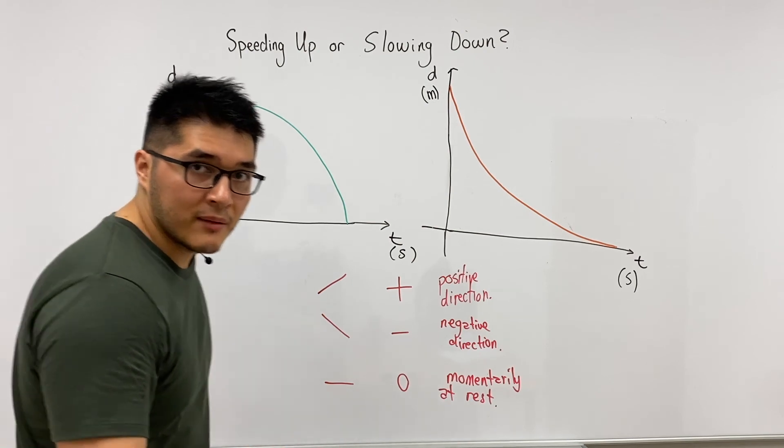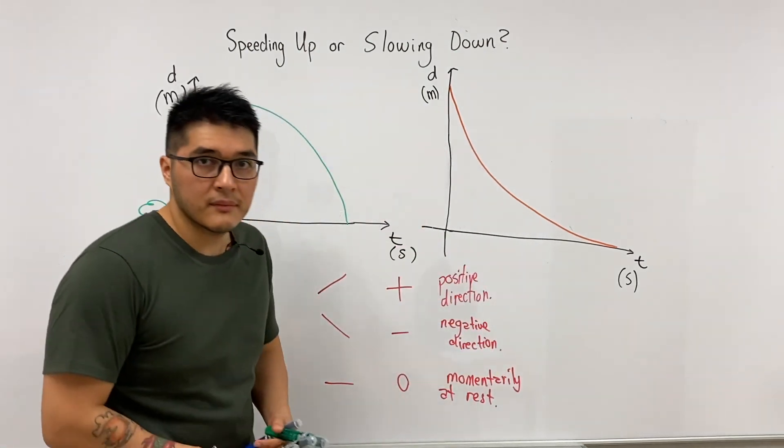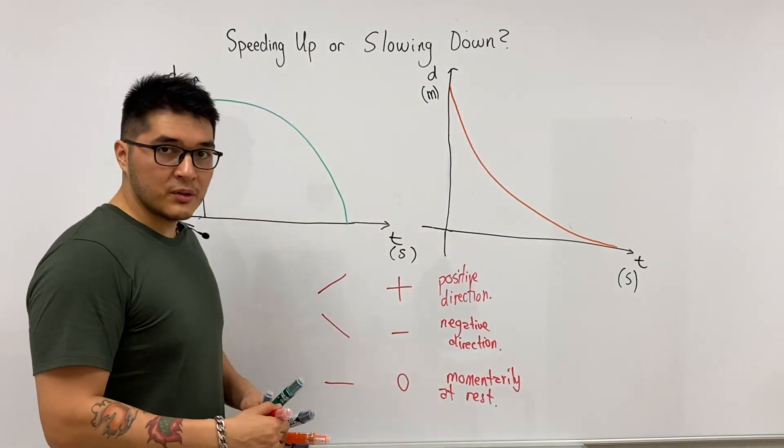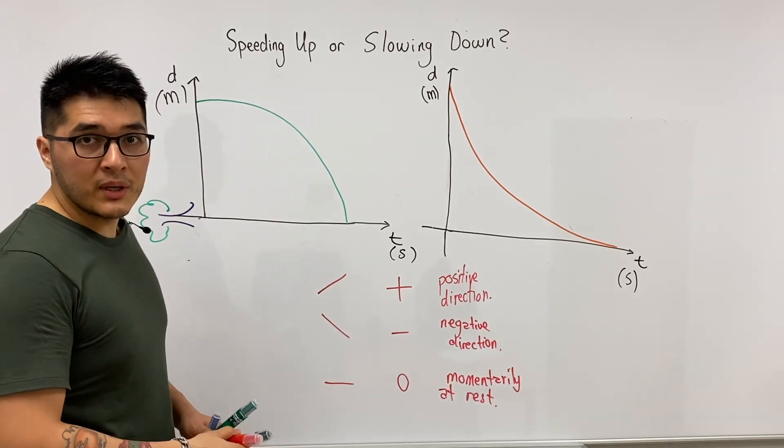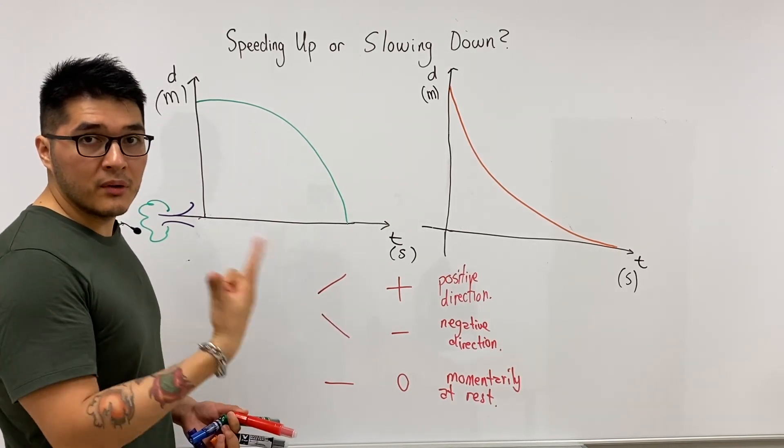But now we have a strategy. We're going to draw tangent lines all along the curve and we're going to follow the trend to determine if it's speeding up or slowing down.